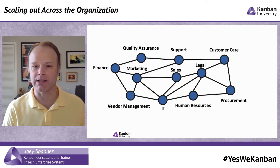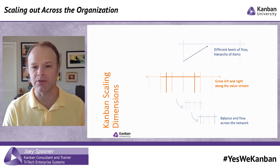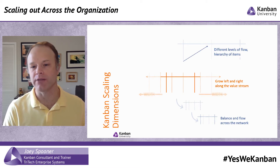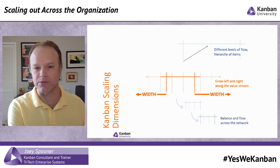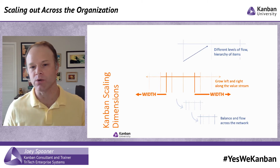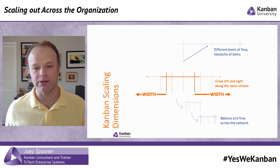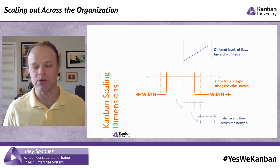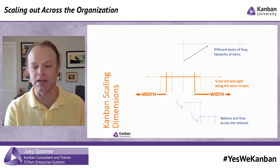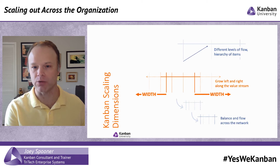Kanban has a couple of dimensions when we're scaling. We have the option to grow horizontally across the value stream — looking to the left to improve quality of engagement with customers, quality of requirements and needs. You're going to find an ongoing need to get closer and closer to your customer as you use Kanban. Many companies I work with tend to solve a problem within a given area, establish that initial service, and then go upstream — like salmon swimming upstream — back to their customer to provide a better quality of service.